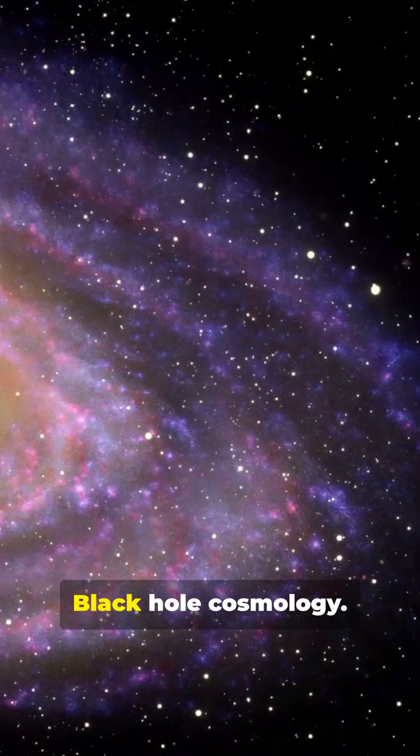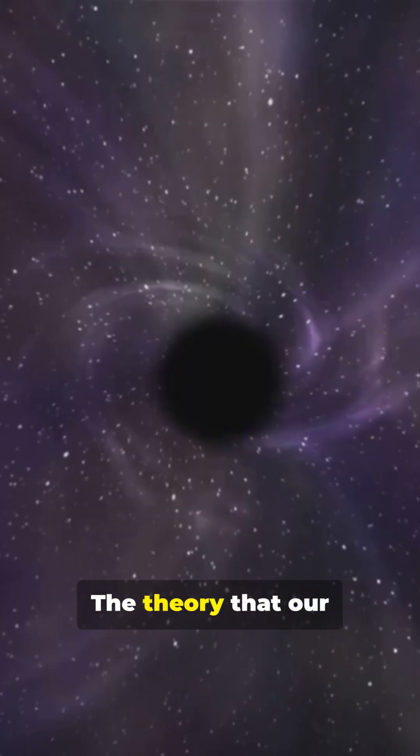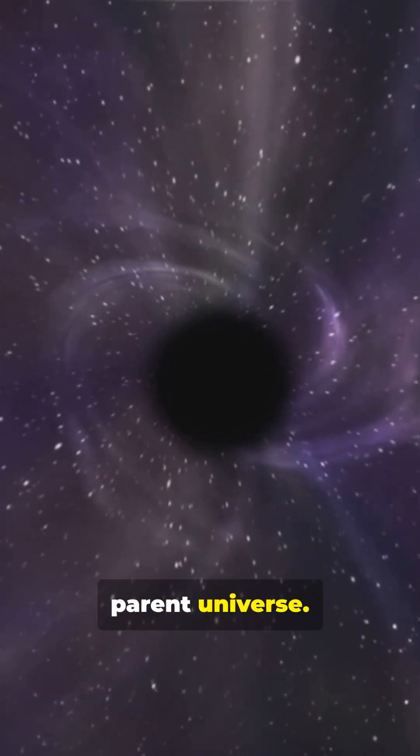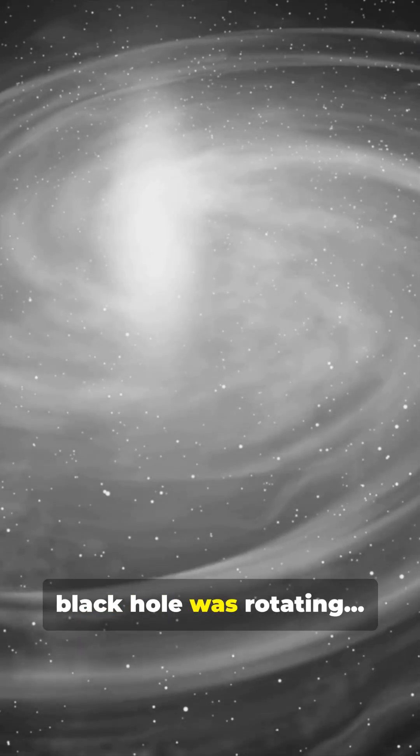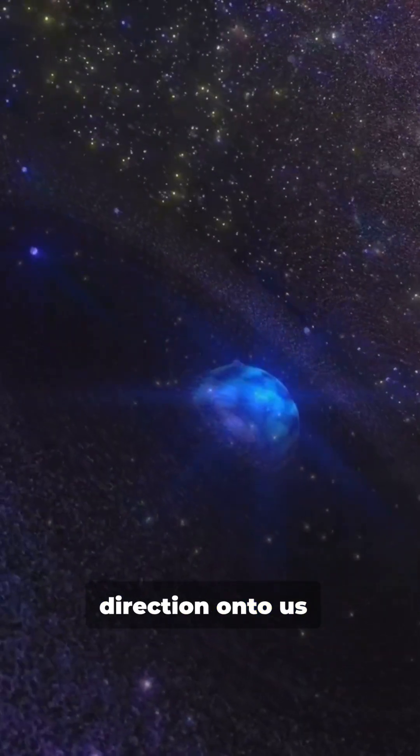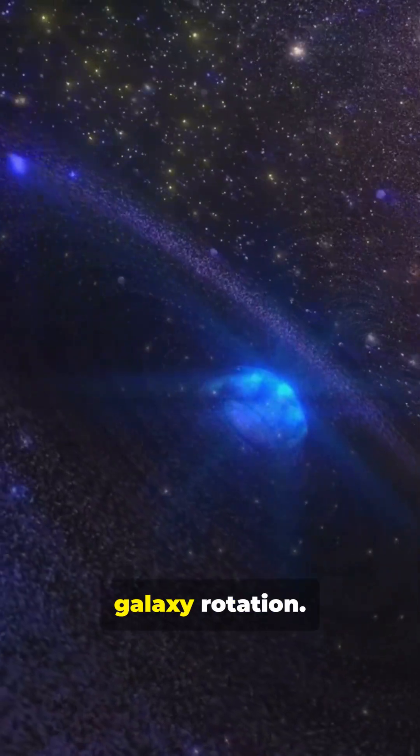One bold idea: black hole cosmology. The theory that our universe might be the inside of a black hole, born from a larger parent universe. If that parent black hole was rotating, its spin could imprint a preferred direction onto us, a cosmic fingerprint we still see in galaxy rotation.